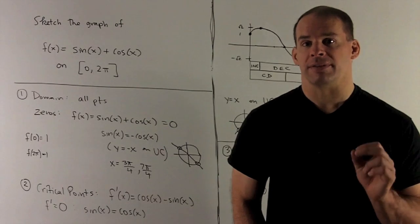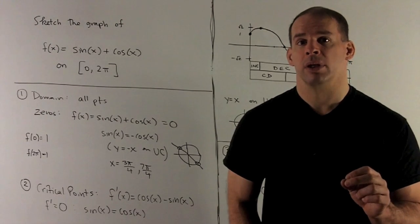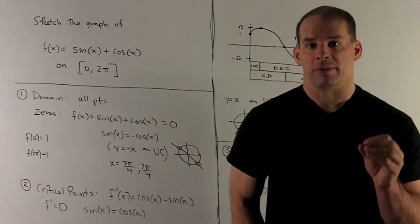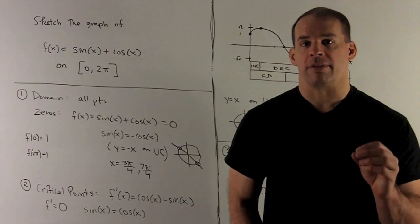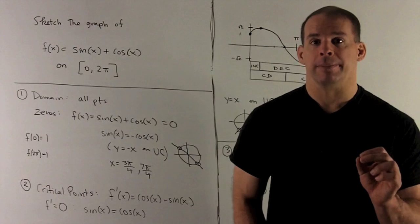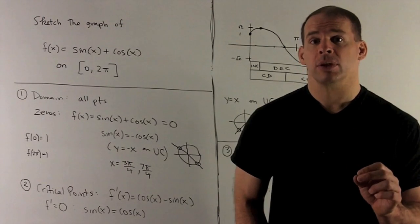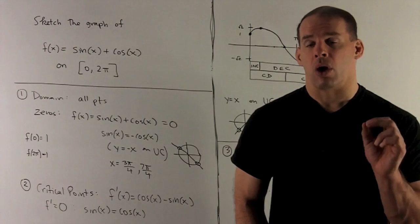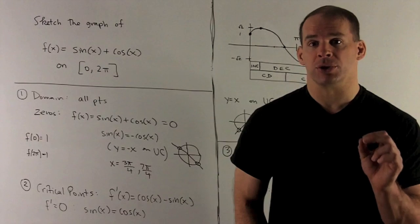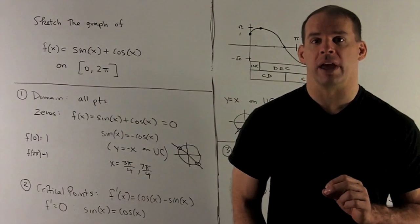Sketch the graph of the function f(x) = sin(x) + cos(x) on the closed interval from 0 to 2π. We have our checklist of items that we go through when we graph a function. First, the domain. Since sine of x and cosine of x are defined at all x, our domain is all real numbers, but we're only told to sketch from 0 to 2π, so the domain is from 0 to 2π, including the endpoints.